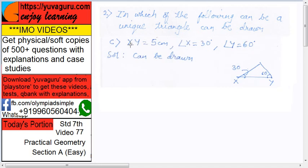Next, XY equals 5, angle X equals 30, angle Y equals 60. Can a triangle be drawn? Yes, it can be drawn. Why? Because once you know XY equals 5, and angle 30, angle 60, there can be only one triangle. The length cannot change at all if these three things are given.